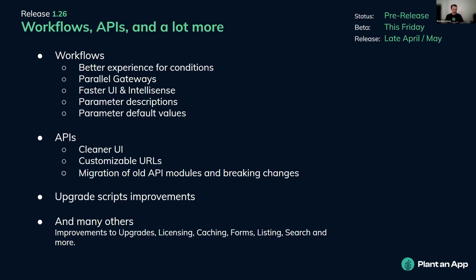The upgrade scripts also suffered a major rewrite — we had many experiences with upgrades failing and not reporting failures properly, so now you can understand exactly what's going on during an upgrade. There's a follow-up to that in version 1.27 that will make the experience very smooth. There are changes to the upgrade screen, licensing, caching, forms, listings, and search. We're aiming to open the beta this Friday, with a release date of late April or early May depending on how the beta goes.